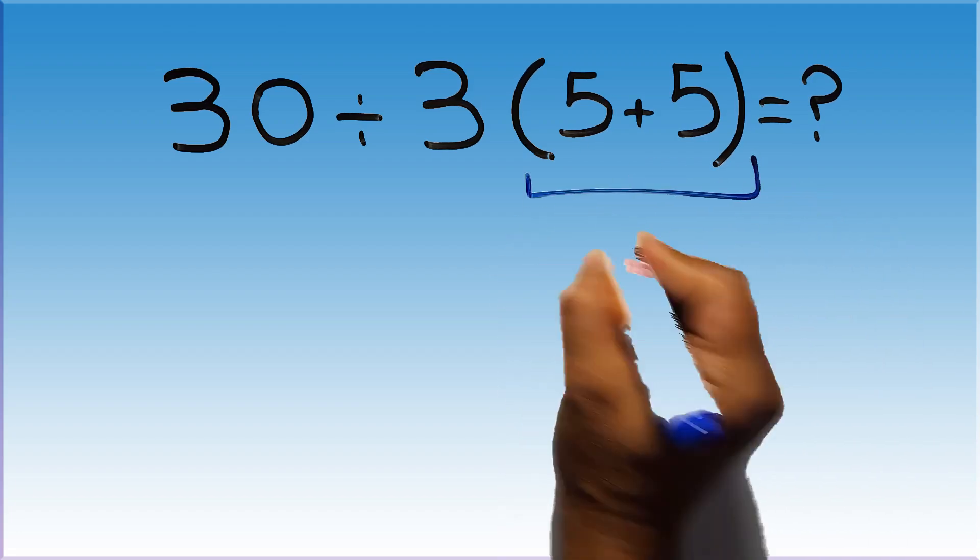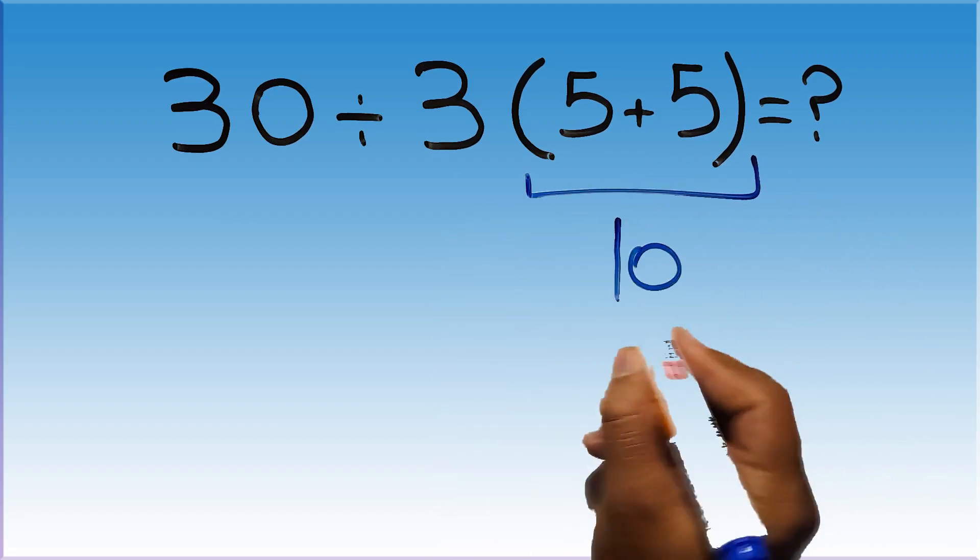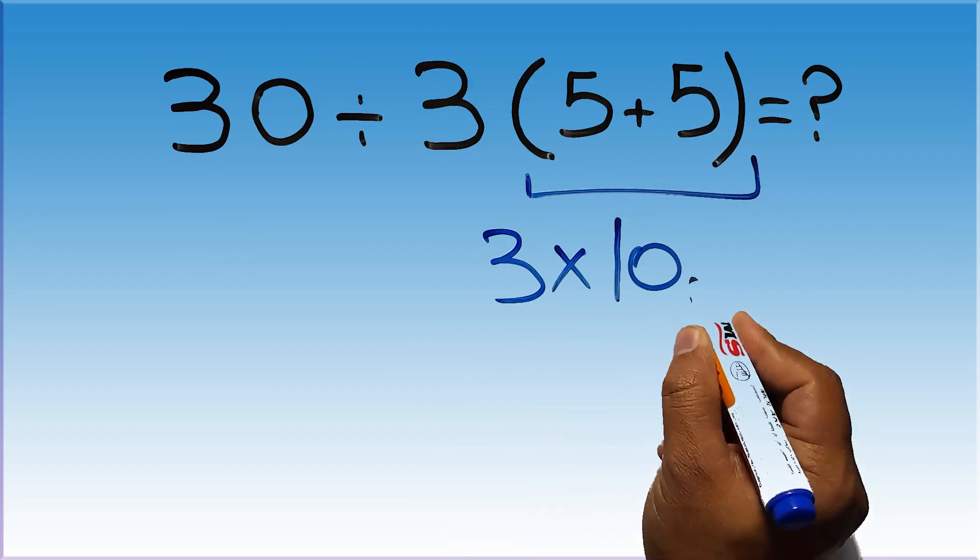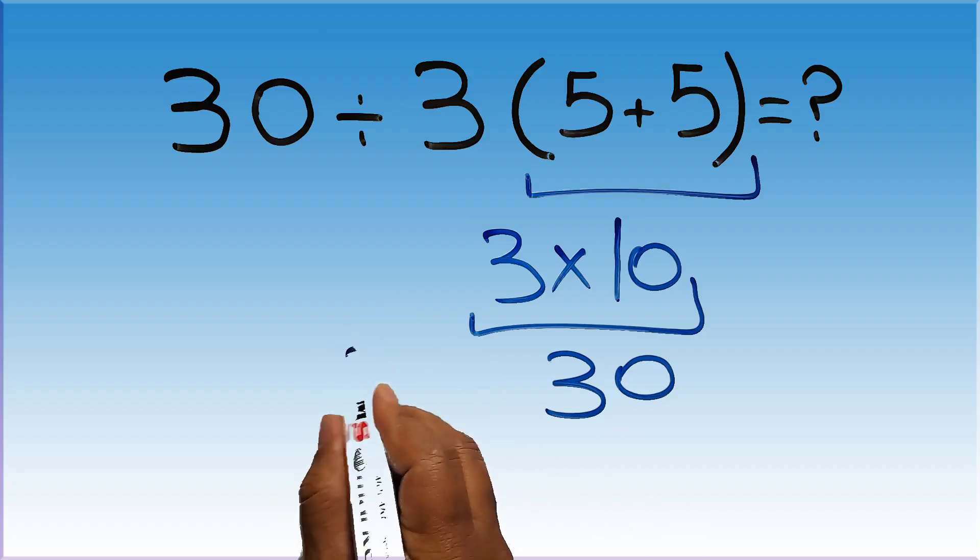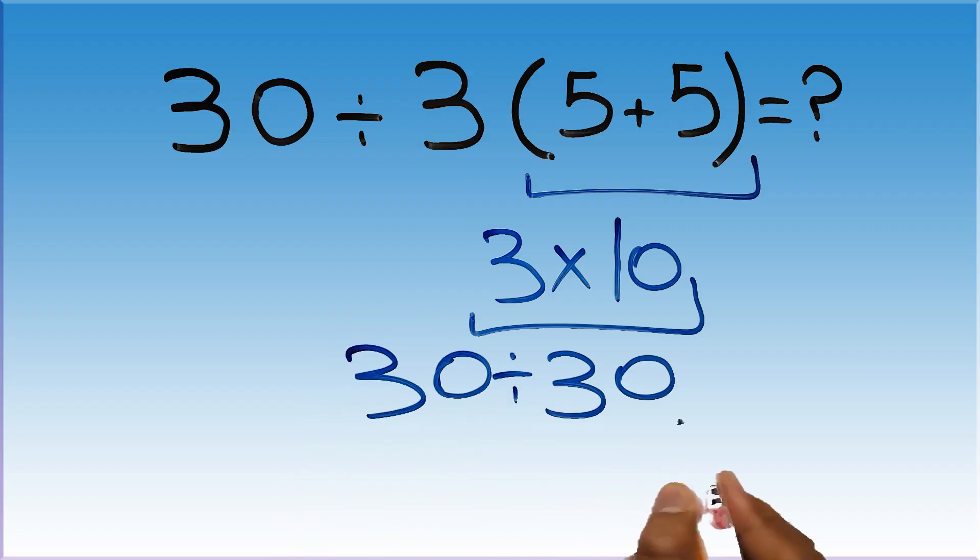5 plus 5 gives us 10, and 3 tens, 10, is just 30. So 30 divided by 30 gives us 1.